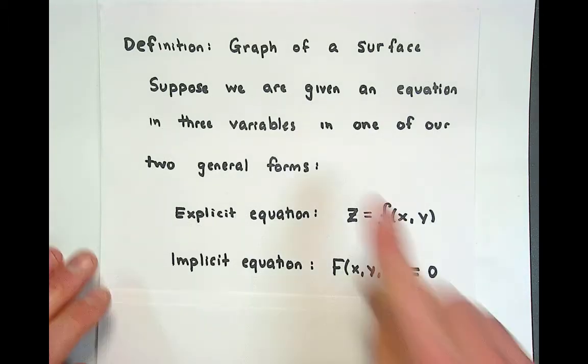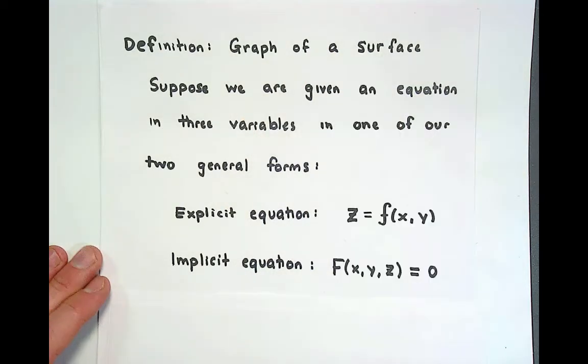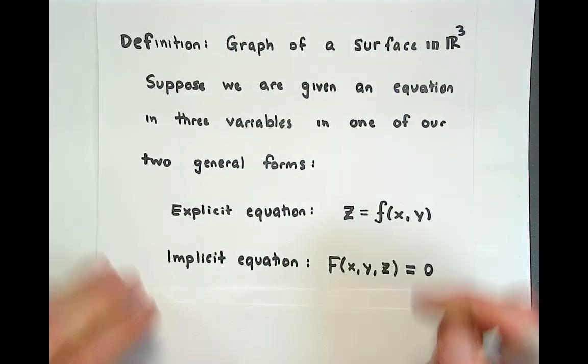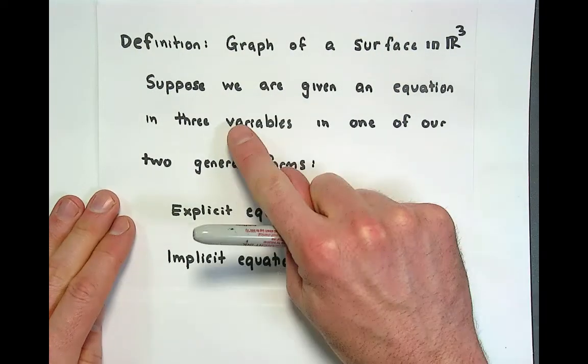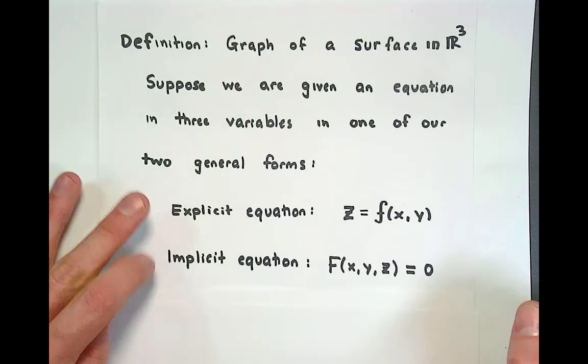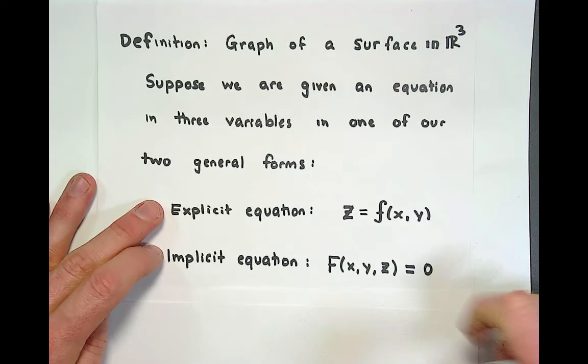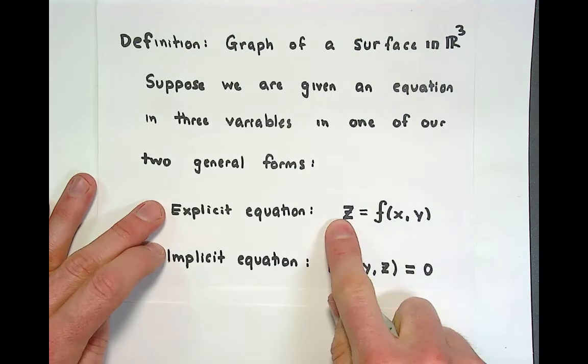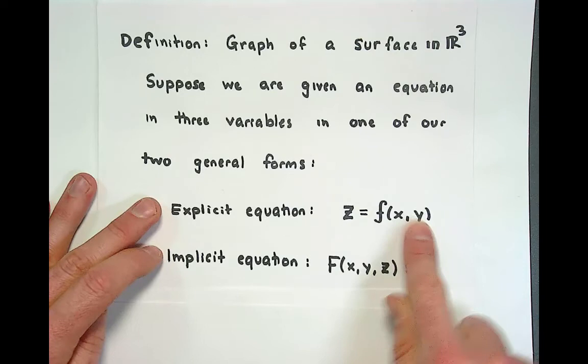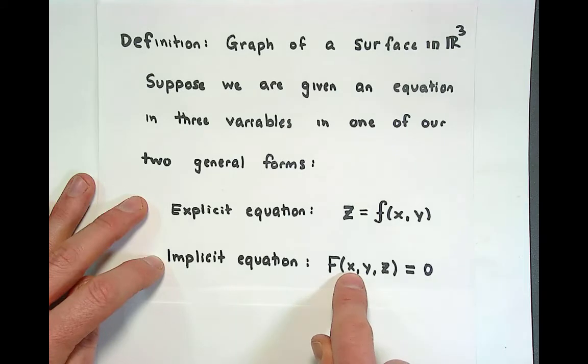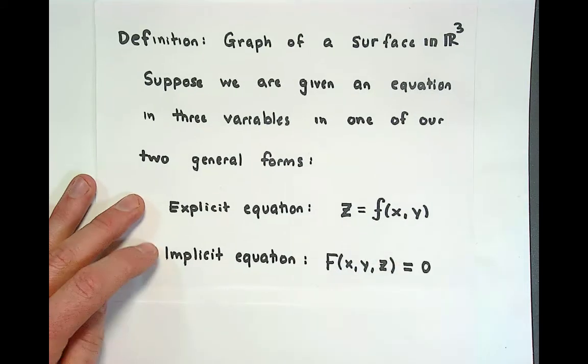In this case we're going to define the graph of a surface in R3 as coming from an equation in three variables in one of our two general forms. So the explicit equation was when we have the output variable as an explicit function of the two inputs and the implicit equation general form was when we did not isolate the output in terms of the input but instead wrote an expression on the left hand side and a zero on the right hand side.